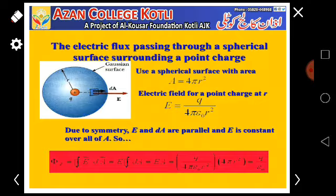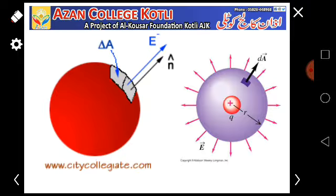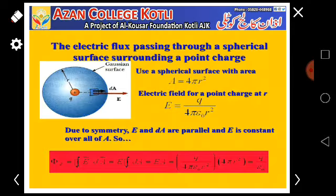Using a spherical surface, the area of a spherical surface can be written as A = 4πr², which is the calculated value. We have already discussed the electric field: if the radius is r, the charge is q, and the electric field is E, then the total electric field E = q / (4πr²). This discussion has come up before.